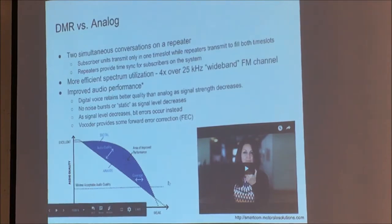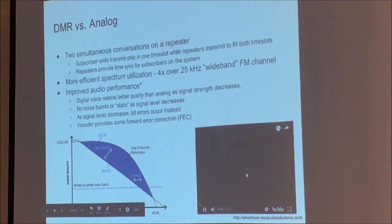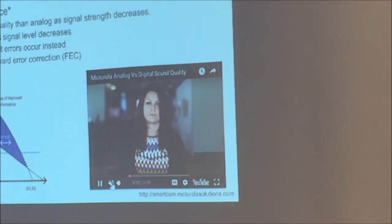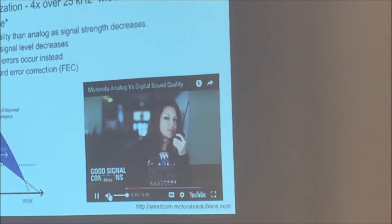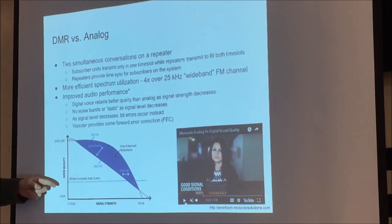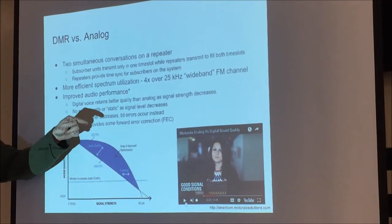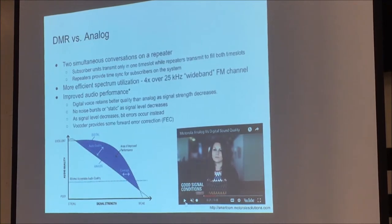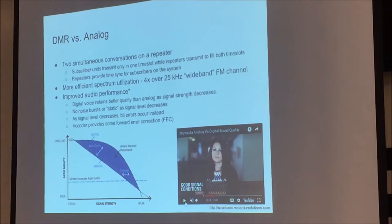Digital voice retains better audio quality as signal strength diminishes. Think of it like digital television: analog signals degrade gradually with static, while digital stays clear longer then drops off sharply — sometimes called 'pixelization' of voice. As someone drives away from a repeater, analog audio quality falls apart gradually, whereas DMR audio remains consistent for longer then drops off more sharply. The vocoder provides forward error correction, compensating for a certain number of missed bits before the signal becomes unrecoverable.